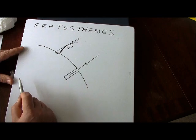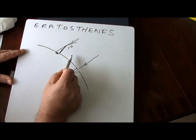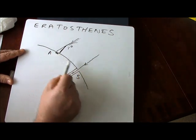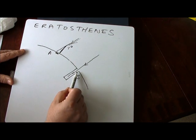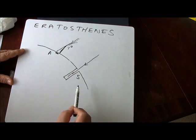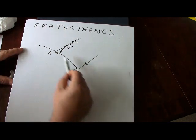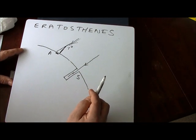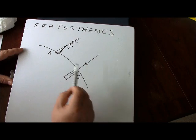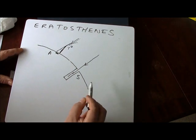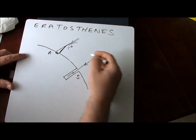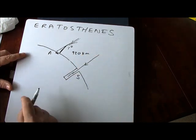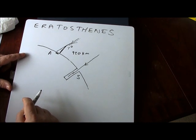So the surface of the earth is curved, and this angle is seven degrees. If we know the distance between Alexandria and Syene accurately, then since that distance corresponds to seven degrees, the distance for 360 degrees is the circumference of the earth. Eratosthenes hired somebody to accurately measure the distance by walking it with camels — it took them several days.